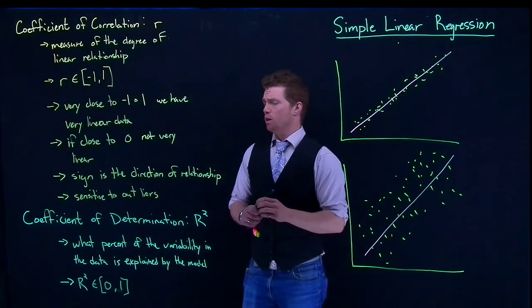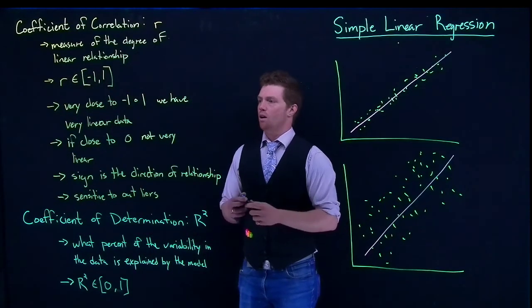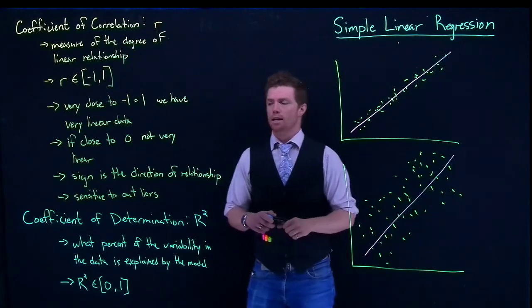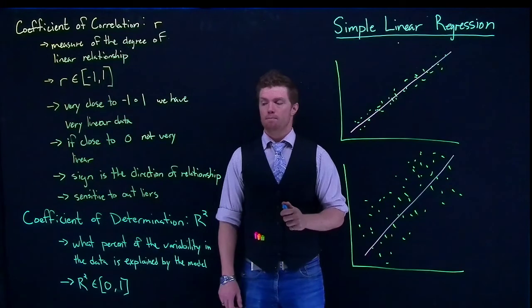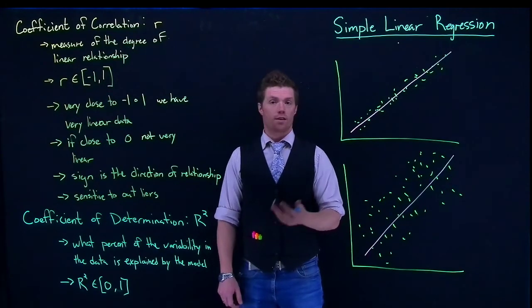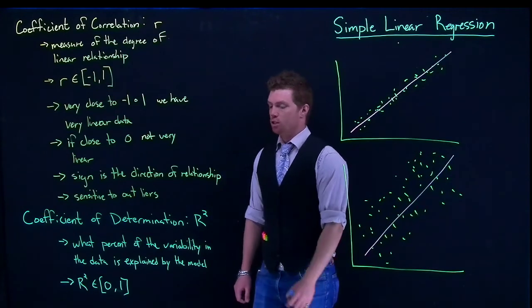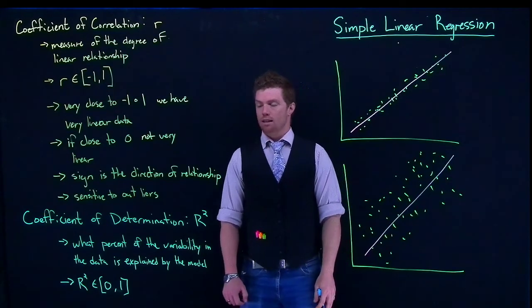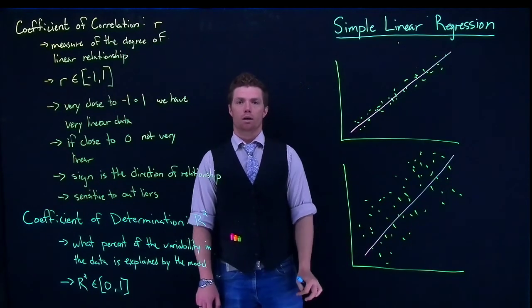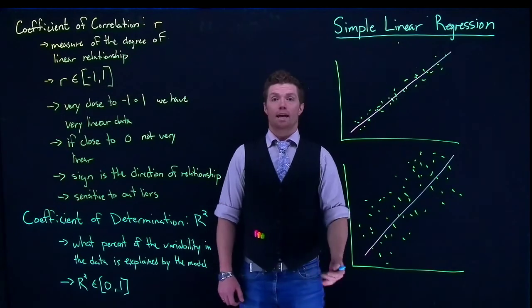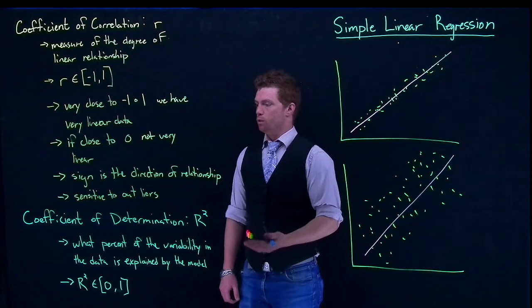So typically, we also want to know what's a good r squared value. It really kind of depends upon the field of study that you're in. Some fields want r squareds very high, like in the 95, 99% range. Other fields of study can relax that down a little bit. We're more comfortable with like 80%. But we do want that number as high as we possibly can.